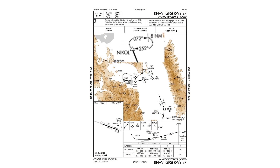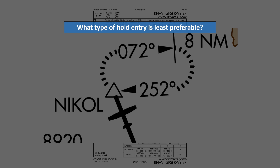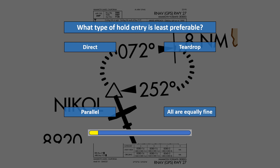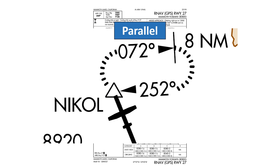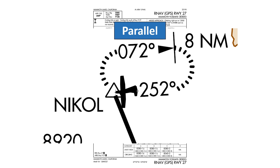The last question deals with the holding procedure. Any hold that keeps us within the protected area is legal, but is there one type of hold entry that is the least preferable out of the three? Is it direct, teardrop, parallel, or are they all equally okay? You can do anything that keeps you protected, but a parallel entry makes the least sense, as it involves a large right turn followed by a series of abrupt reversals to get inbound. A direct entry works best here, but a teardrop may be fine too.